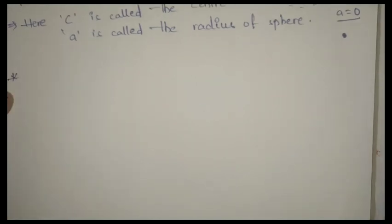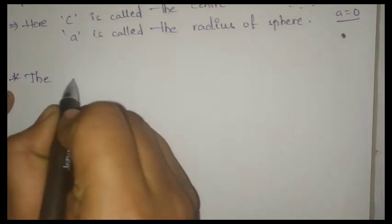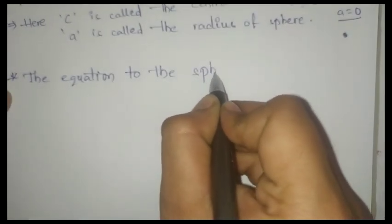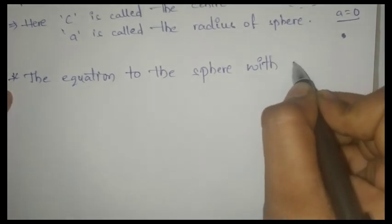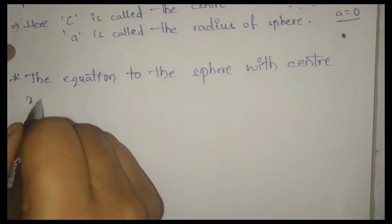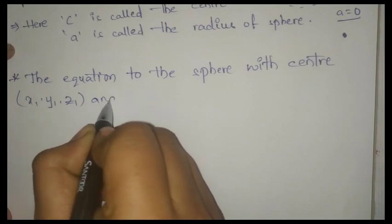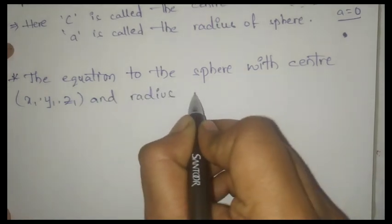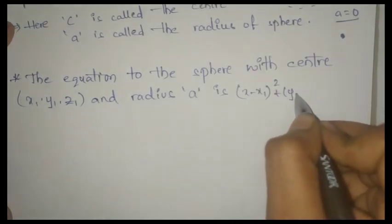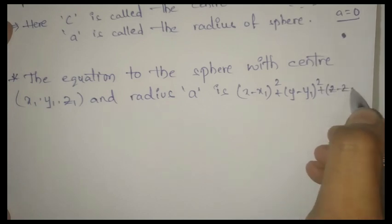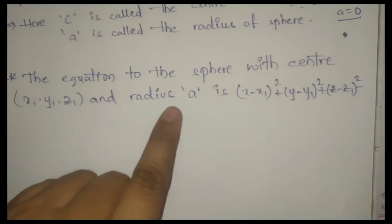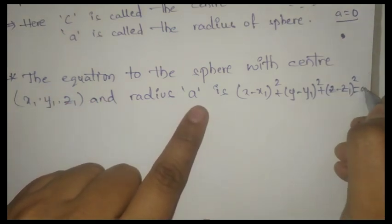The equation of the sphere with center (x1, y1, z1) and radius 'a' is: (x − x1)² + (y − y1)² + (z − z1)² = a². This is the equation of the sphere with center (x1, y1, z1) and radius a.